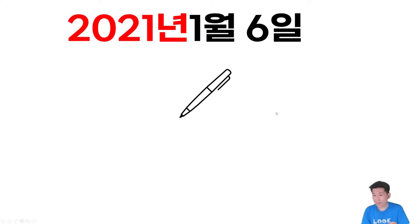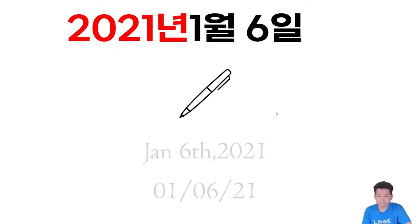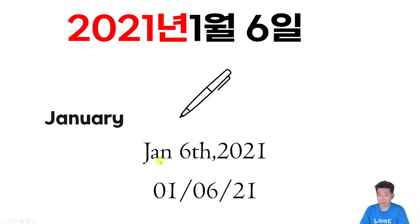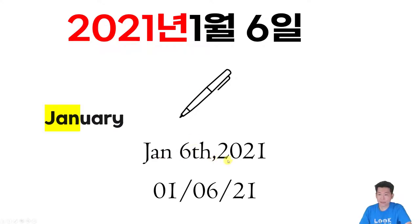그러면 라이팅 할 때는 어떻게 쓰면 될까요? January를 간단하게 JAN이라고 할 수 있거든요. 앞에 있는 세 글자만 딴 거죠. 그 다음에 6th, 그 다음에 2021. 이렇게 하시면 되겠습니다.